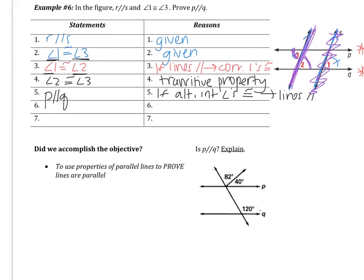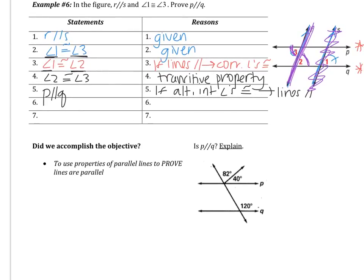We have reached the end of this video. In this video, you learned how to prove lines parallel. Occasionally you'll be asked to fill out a proof, or asked whether it's possible to prove the lines parallel, or which lines are proven parallel. Here is your example problem: is P parallel to Q? Explain. I'm going to be looking for an answer that says yes or no with an explanation using one of those four reasons you learned at the beginning of the video. Good luck.